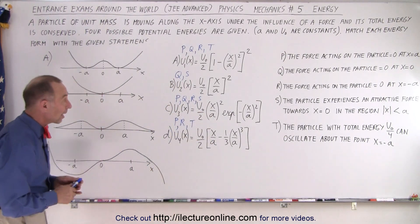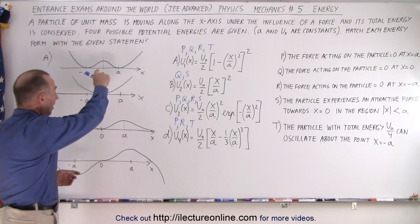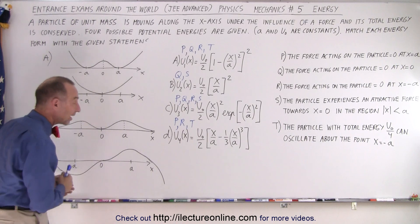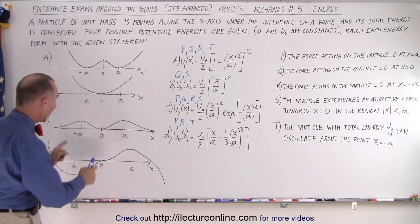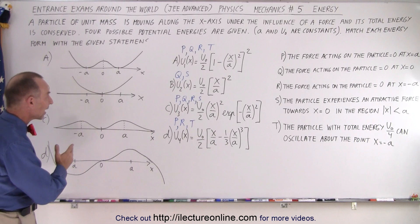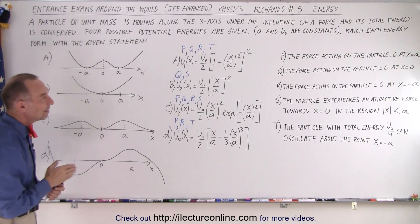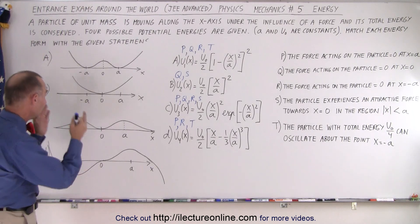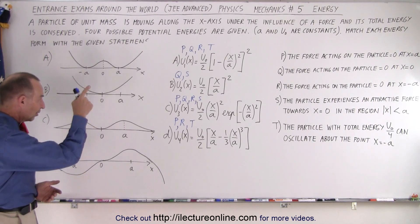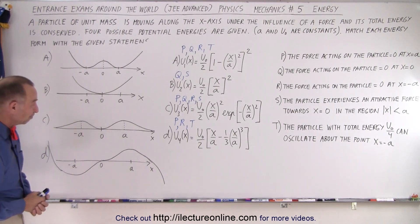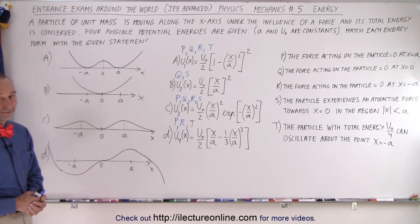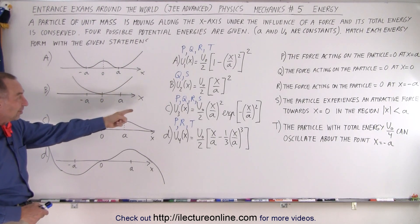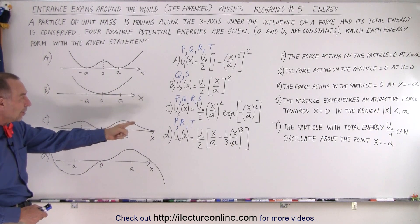The way to solve this problem is to first graph the four equations to see how the potential energy increases and decreases as a function of x relative to the origin and the points a and negative a. Once you have that, it's relatively easy to evaluate the five statements for each equation. Final answers: For A — P, Q, R, T. For B — Q and S. For C — P, Q, R, S. For D — P, R, T.